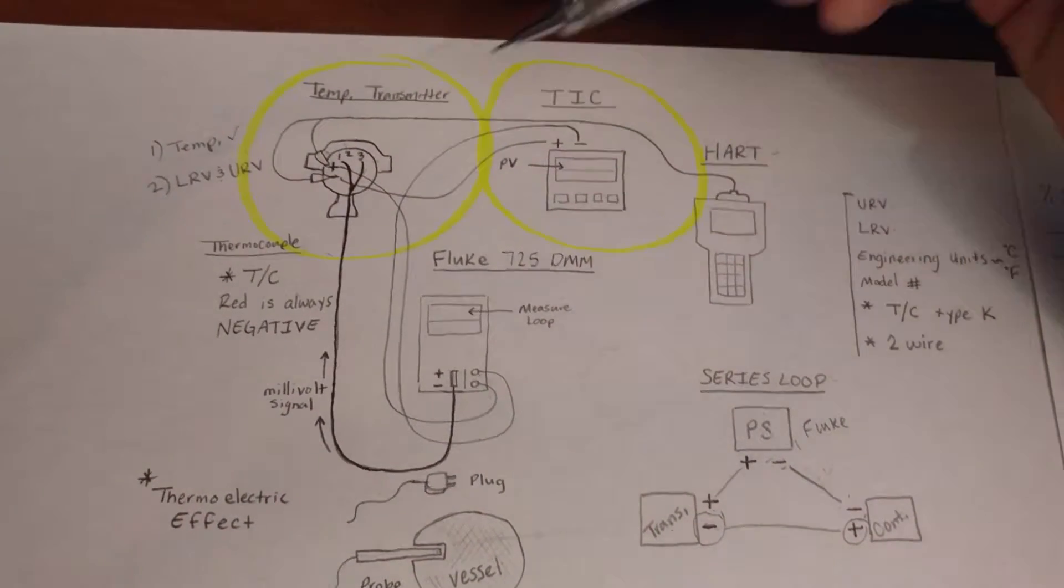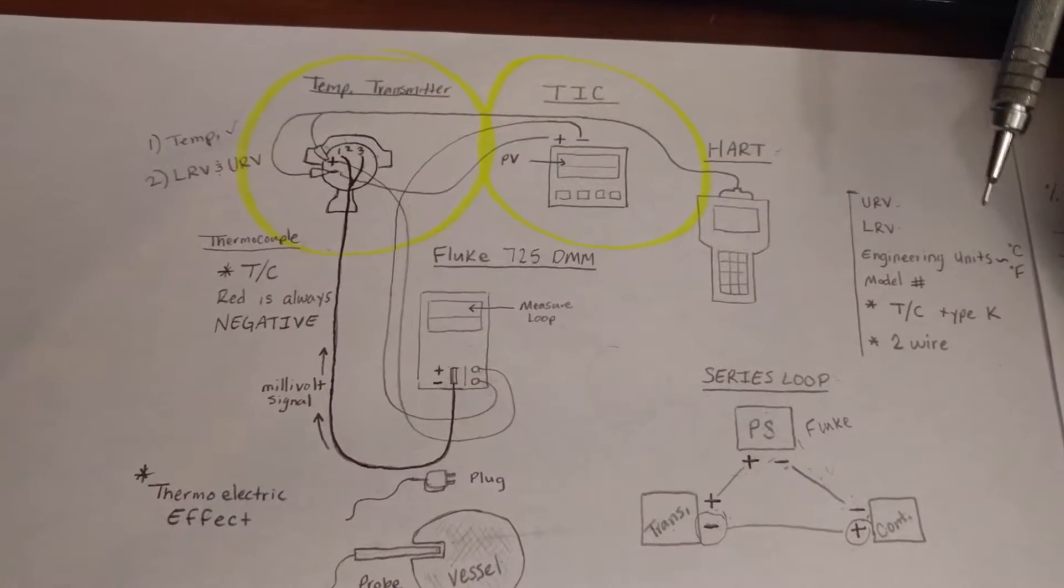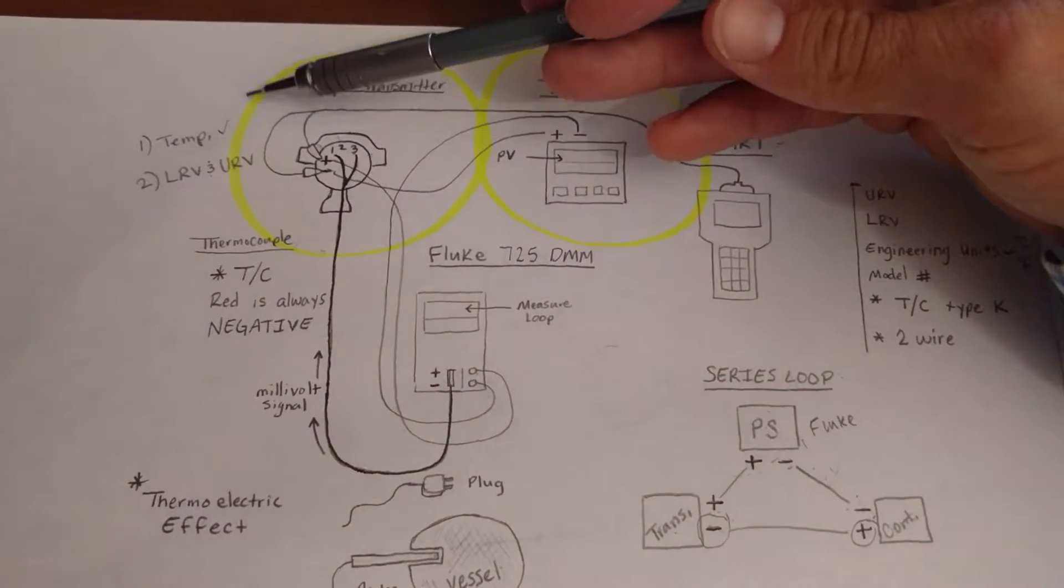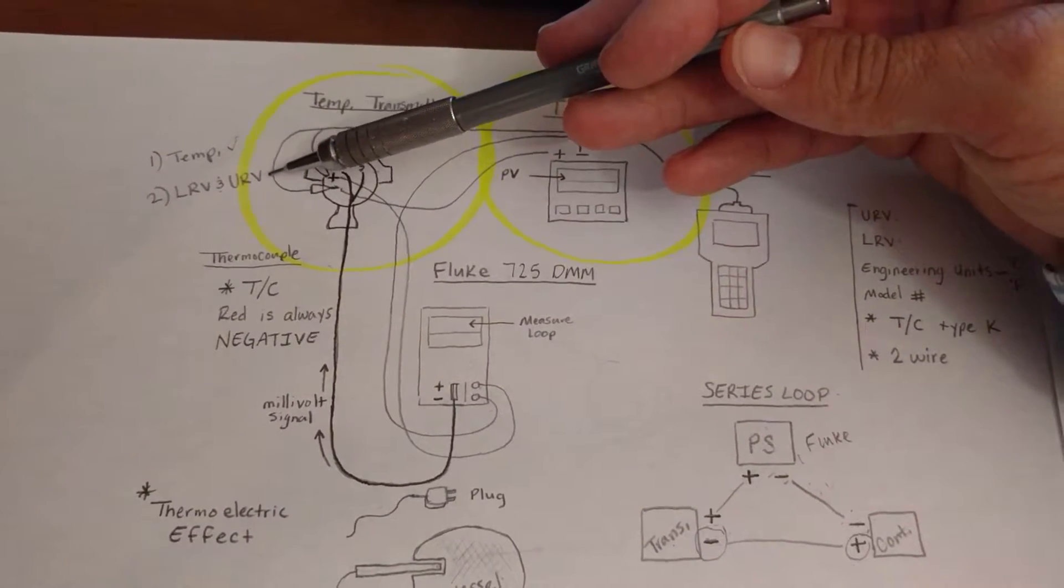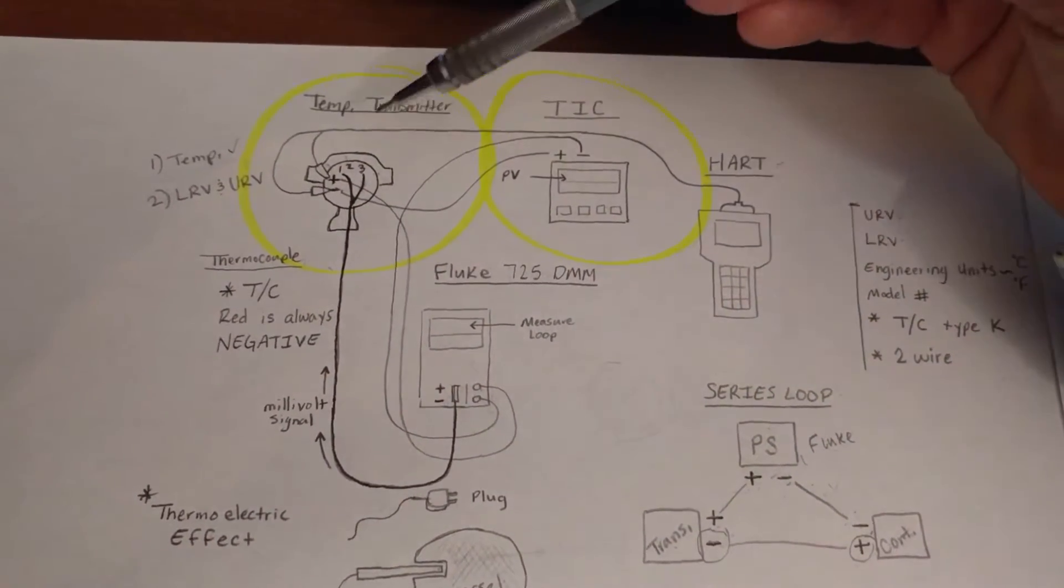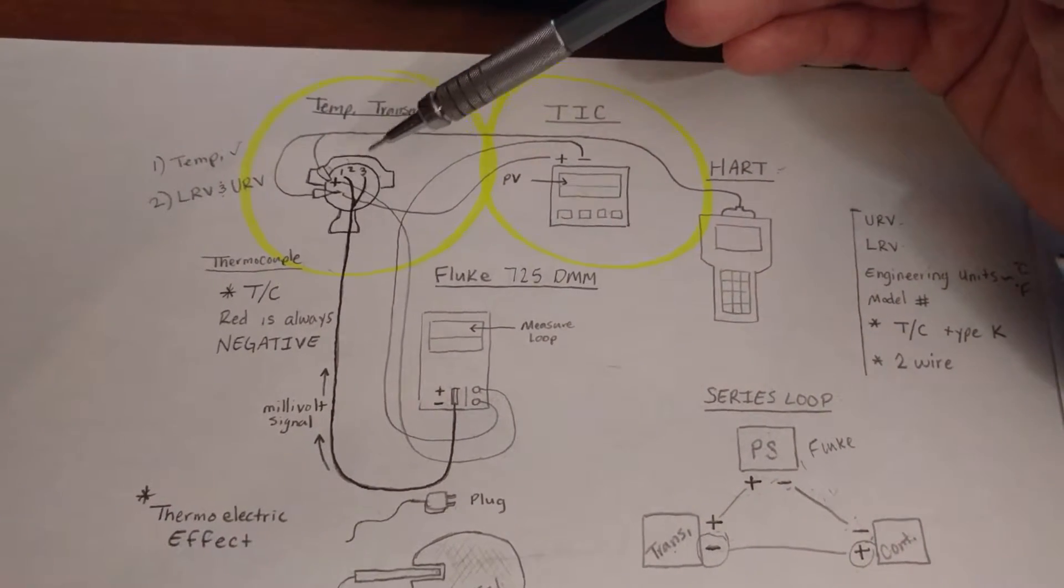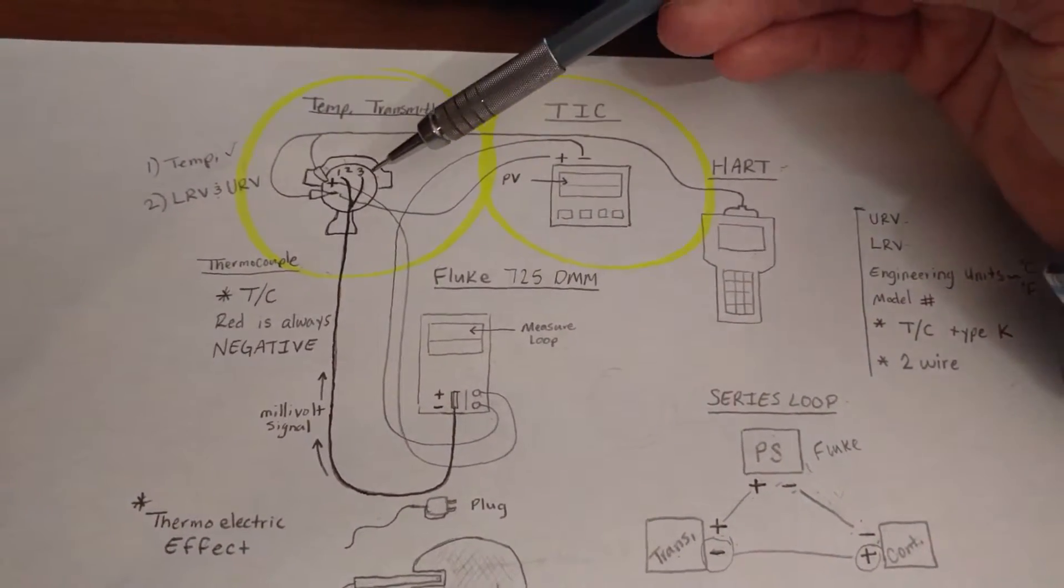Okay, so temperature transmitter, let's say we want to test it. Now temperature transmitters need two things: they need a temperature value and they need a lower range value and upper range value. So inside of this temperature transmitter resides a lower range value and an upper range value that have been set.